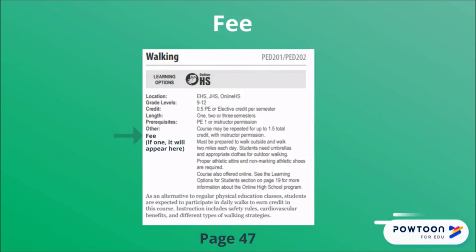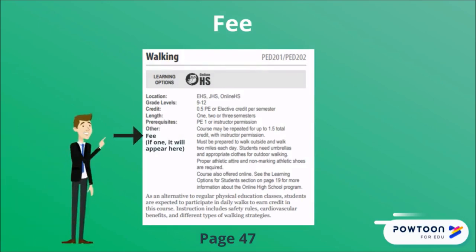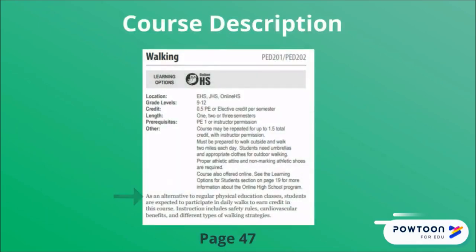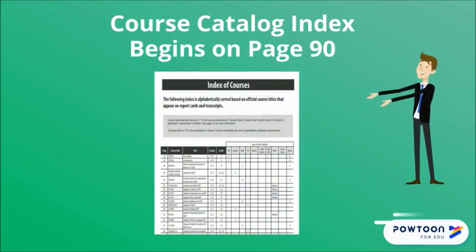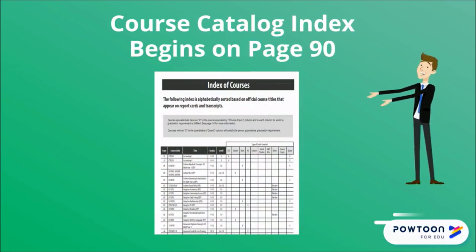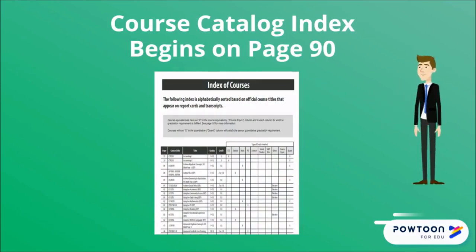Some courses include a fee, which is listed here. Finally, a brief description of the course is included — give it a read so you know what to expect when you take this class. Now that you know how to read a course listing in your course catalog, take a look at the index on the following page to see a full list of courses offered by the Everett School District. The index includes credit information about the course and page numbers where you can find more detailed information about the specific course.